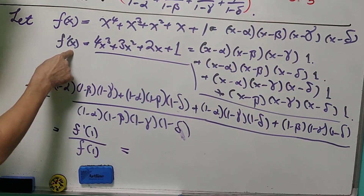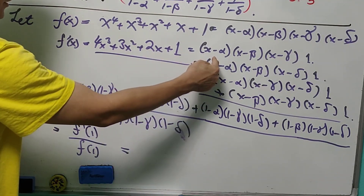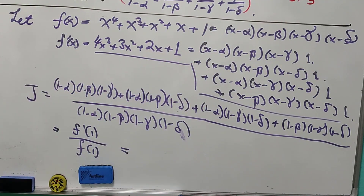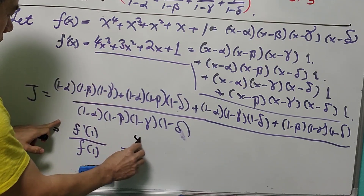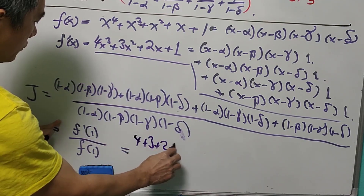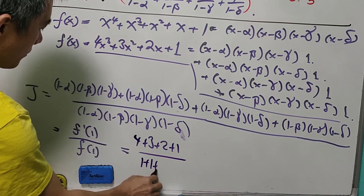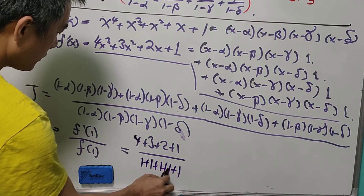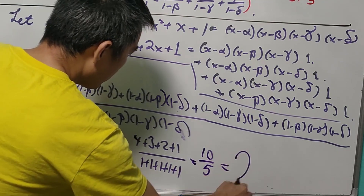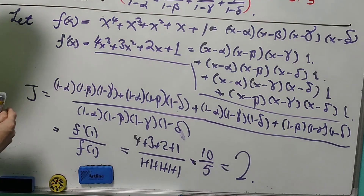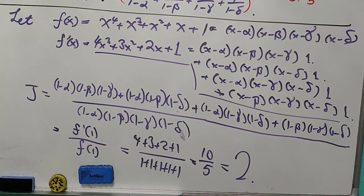Substituting x = 1: f'(1) = 4 + 3 + 2 + 1 = 10, and f(1) = 1 + 1 + 1 + 1 + 1 = 5. So J = 10/5 = 2. That's the end of Method 2.